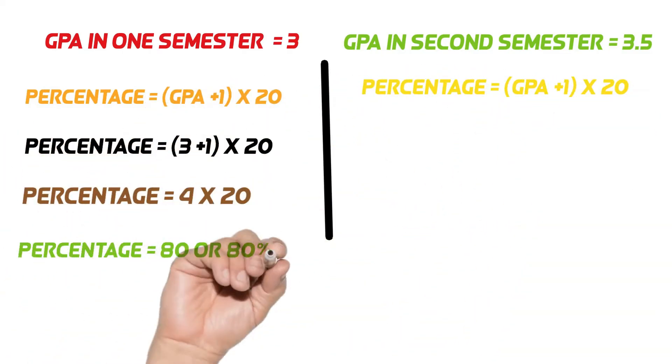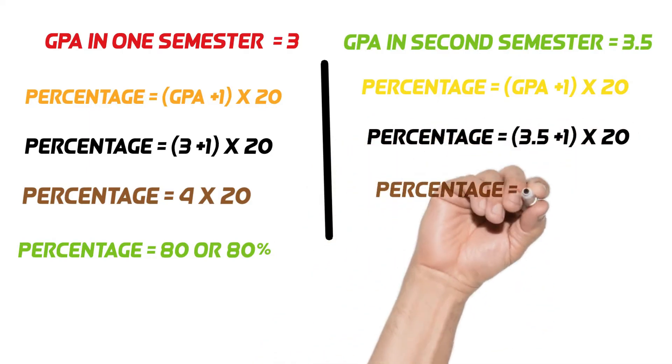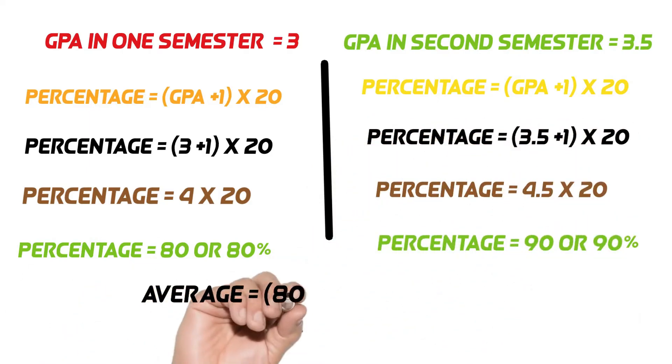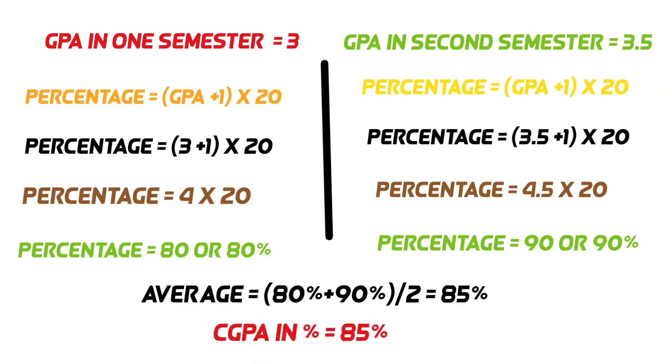First, we convert the GPA of each semester in percentage. Semester 1 GPA convert to percentage is 80%. In the second semester, the GPA converts to a percentage of 90%.